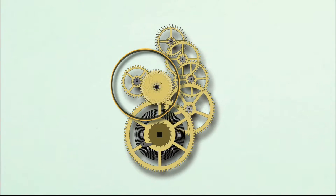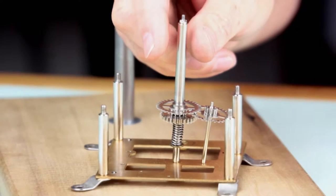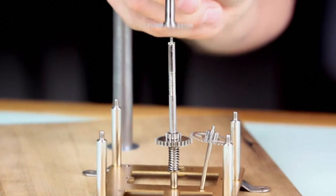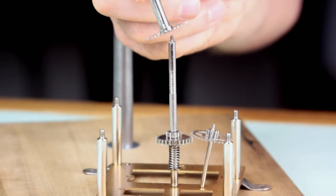These wheels divide the hourly rotation of the center wheel by 12 and drive the hour pipe where the hour hand is attached. It's called the hour pipe rather than the hour arbor because it is a long tube that slips over the center arbor, creating the concentric hands of the clock.